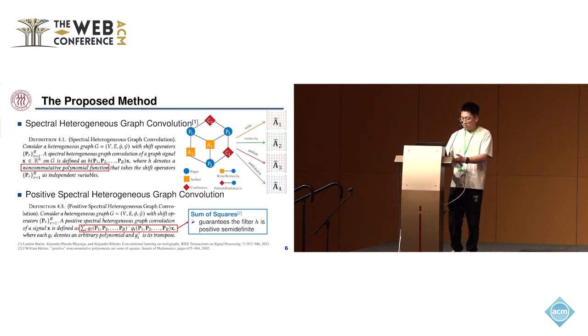So we further propose a positive spectral heterogeneous graph convolution, which uses the sum of squares to define heterogeneous graph convolution. In this form, g_i denotes an arbitrary polynomial, and g_i transpose denotes its transpose. Earlier research has proved that this sum of squares can ensure positive semidefiniteness. This form is also called the positive non-commutative polynomials.